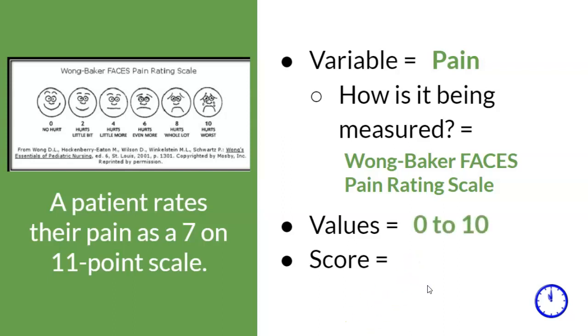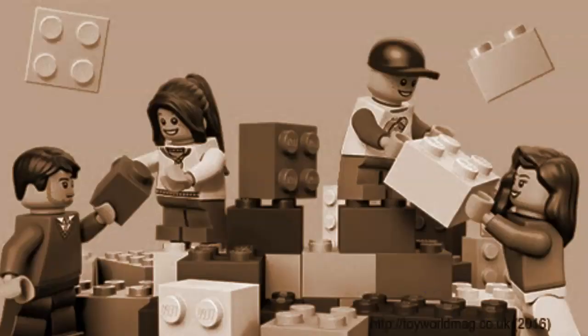Finally, the patient's score is a 7, because that is what she rated her pain. In summary, research is about variables, values, and scores. Variables are an important LEGO building block to understanding statistics.